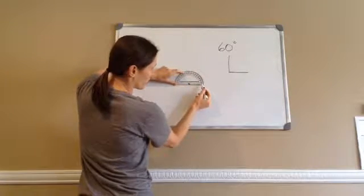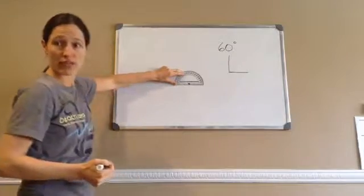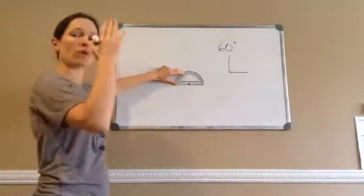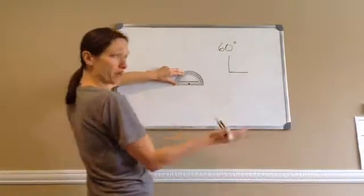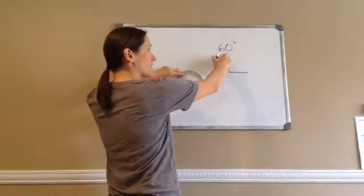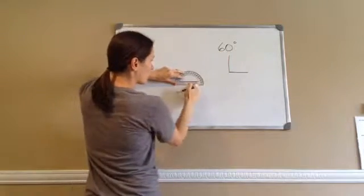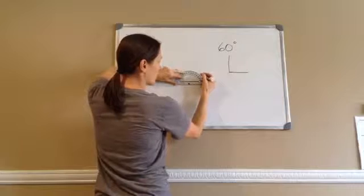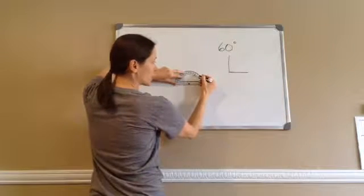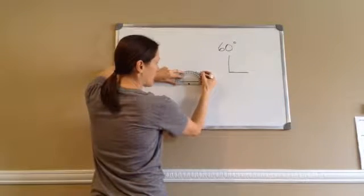So you need to know if you're drawing an acute angle or an obtuse. Obtuse is greater than 90, acute is less than 90. So I'm going to use these little numbers because I know I'm drawing an acute. So right here it says 60 and 120, I'm going to use the 60. Here's that line for 60.